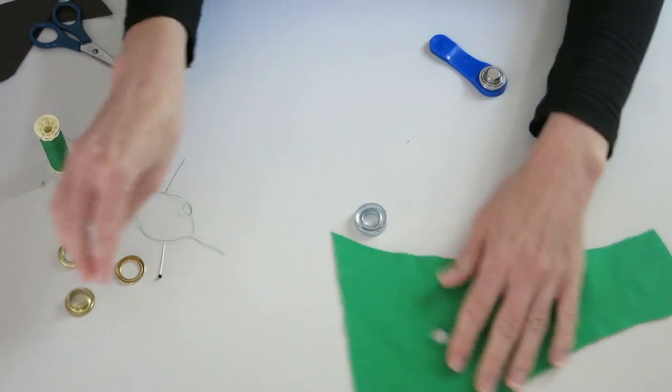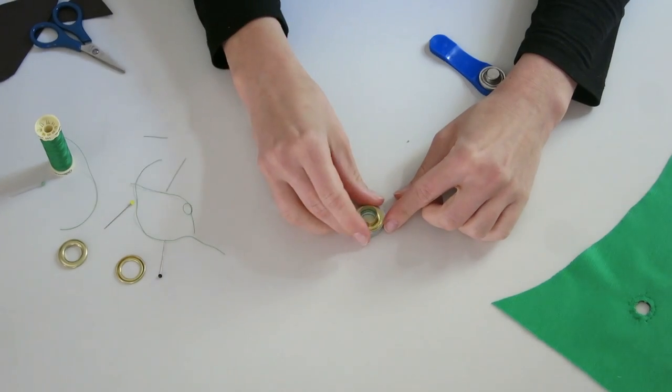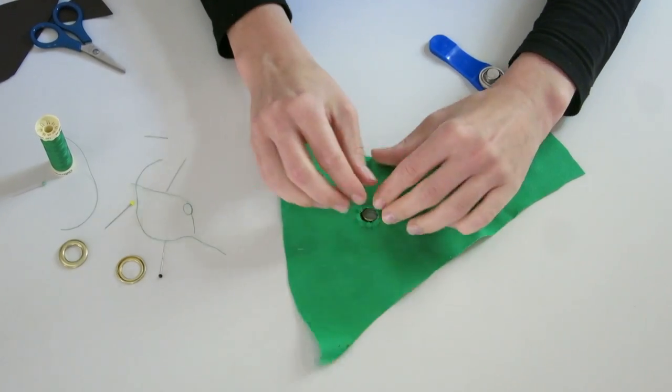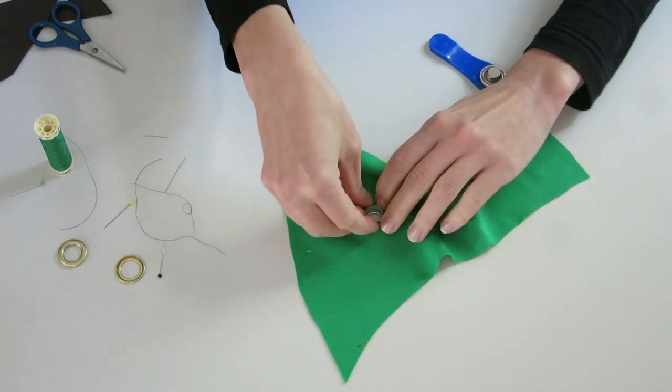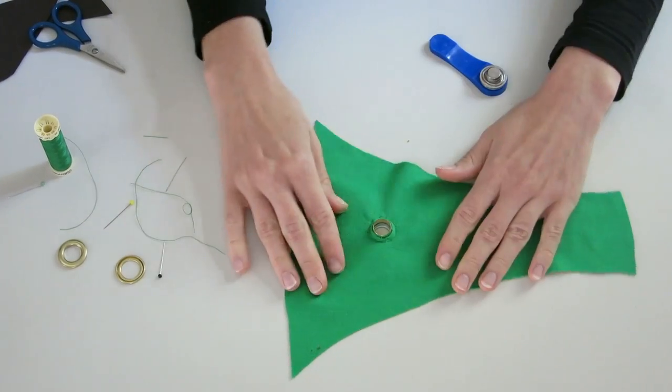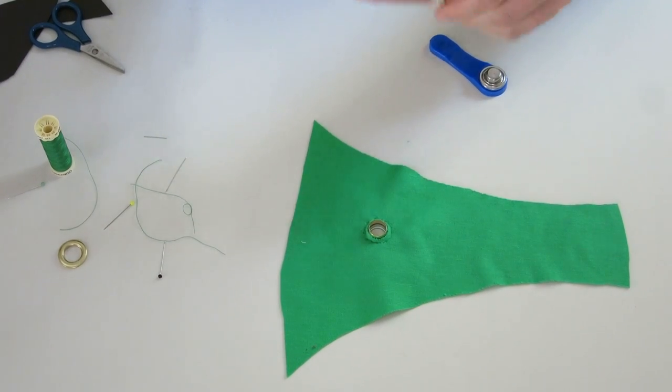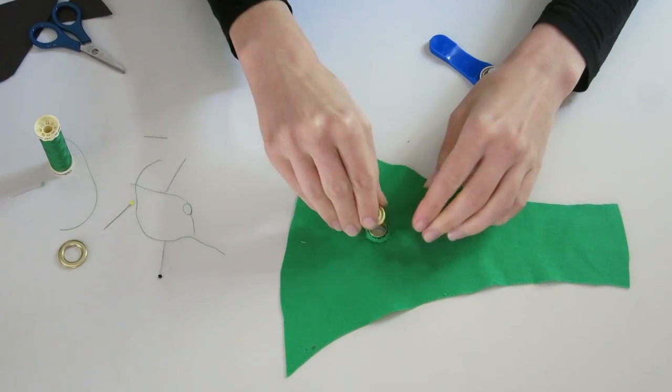Now I will set the eyelet again as I have shown you already before. So just put your fabric on top of the lower part of the eyelet. Put the upper part on top of it.